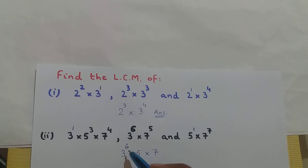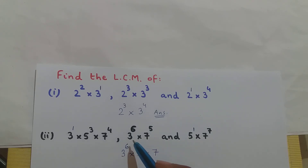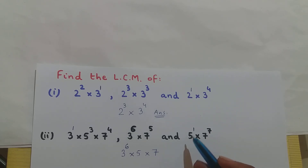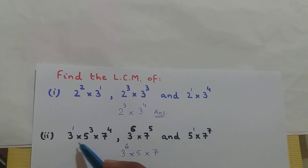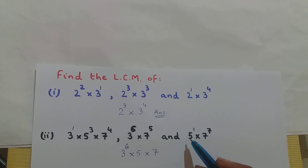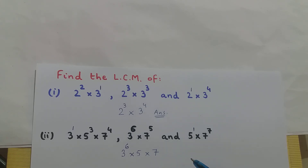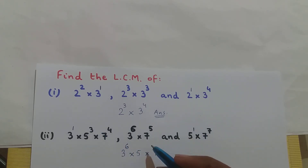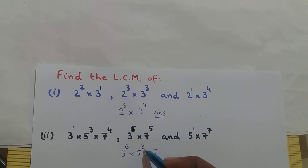Now what is the exponent of base 5? In the first expression I have 5³. The second expression does not have base 5. In the third expression I have 5¹. Pick the greater exponent — 3 is greater than 1 — so the exponent of base 5 is 3.